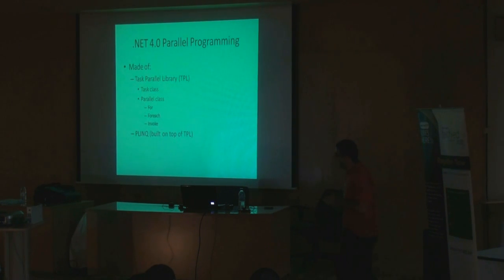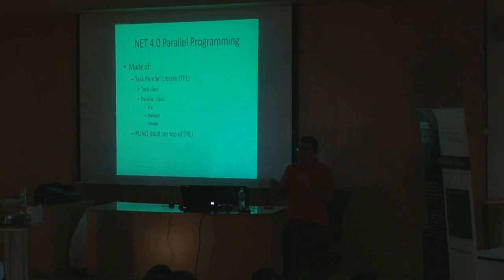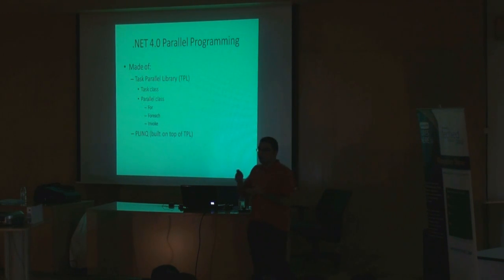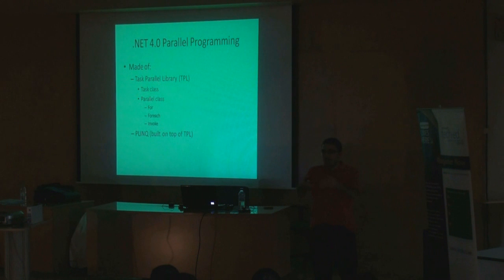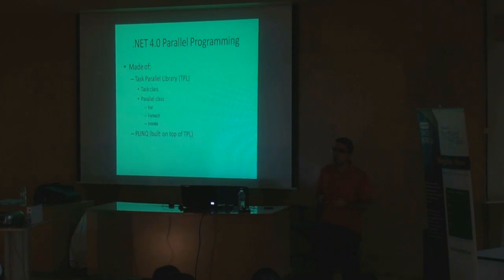.NET 4.0 is built on something called the Task Parallel Library — TPL. The TPL is made of the Task class, which we will see in a demo. The Parallel class, which you will find very interesting because you will use it daily — for example, instead of writing a for loop, you write Parallel.For. Instead of ForEach, you write Parallel.ForEach. And instead of calling methods sequentially like method1, method2, you package those inside Parallel.Invoke and these methods run in parallel. And finally, there is PLINQ, where you will see how easy it is to convert from LINQ to PLINQ.